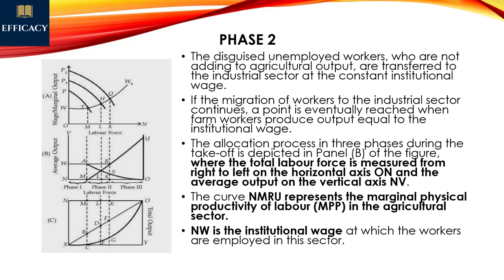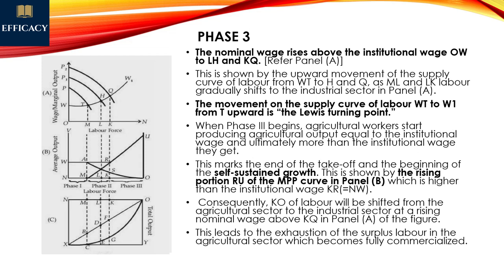In Phase 2, employment occurs in the industrial sector. If labour moves to the industrial sector, higher wages are given. The curve MNRU represents the marginal physical product of the agriculture sector. NM here represents marginal productivity of labour — we need to understand the value of the labour force in this context.